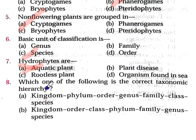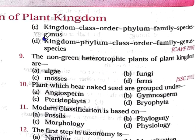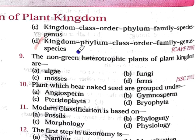Question number 8: Which of the following is the correct taxonomic hierarchy? Option A: Phylum, Order, Genus, Family, Class, Species. Option C: Kingdom, Class, Order, Family, Species, Genus. Option D: Kingdom, Phylum, Class, Order, Family, Genus, Species. The correct option is Option D: Kingdom, Phylum, Class, Order, Family, Genus, Species — this is the correct taxonomic hierarchy.